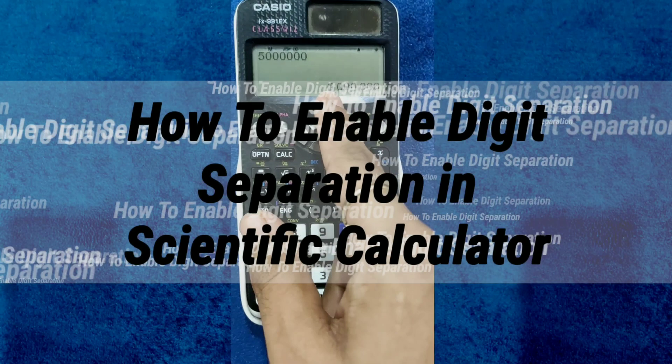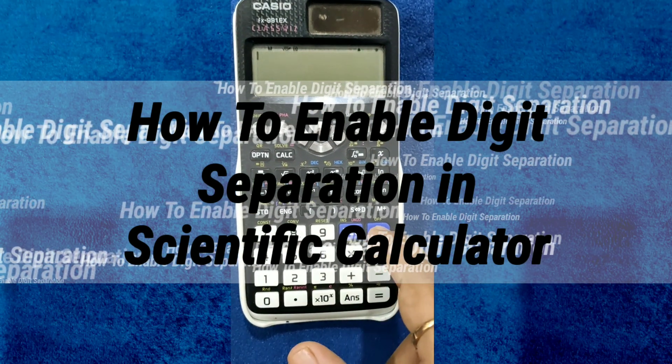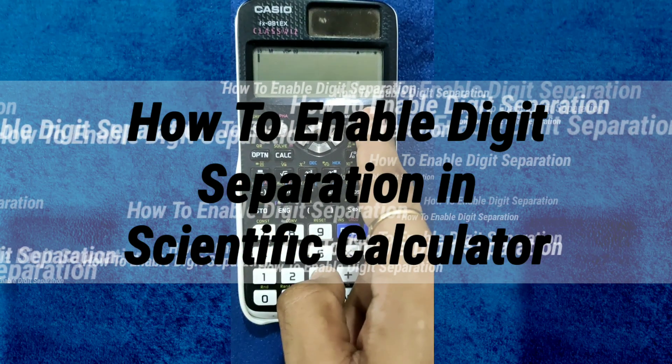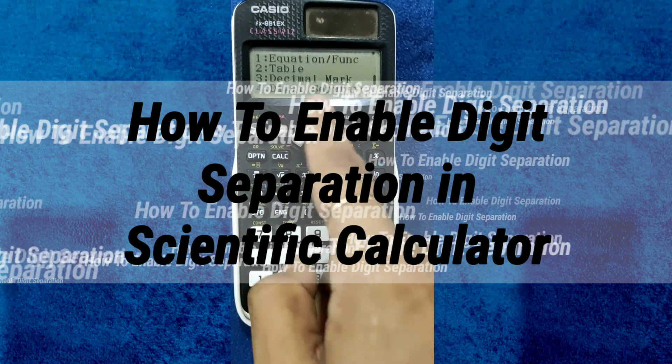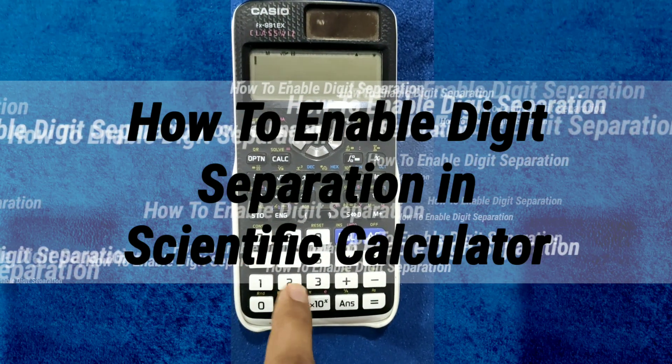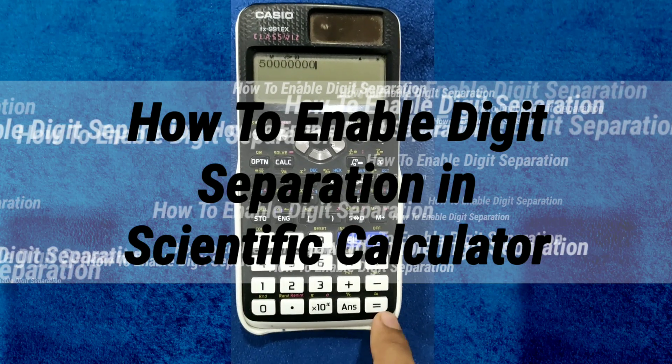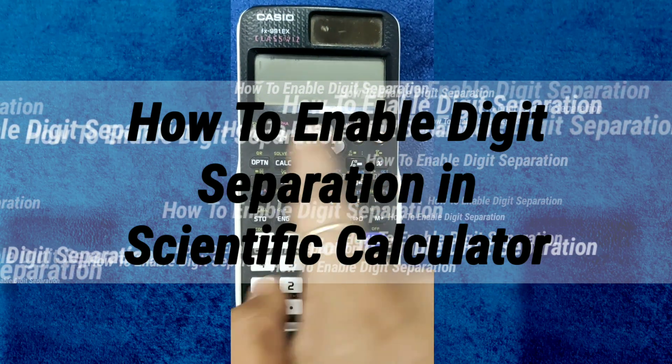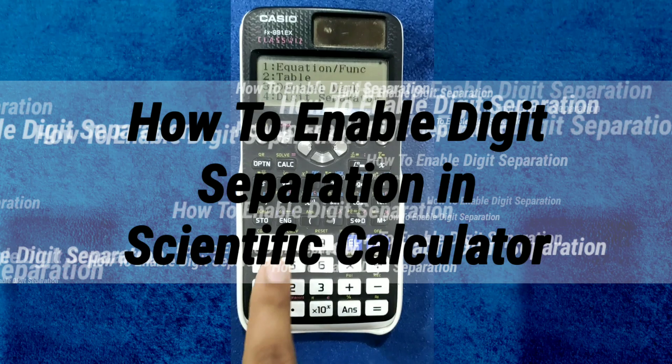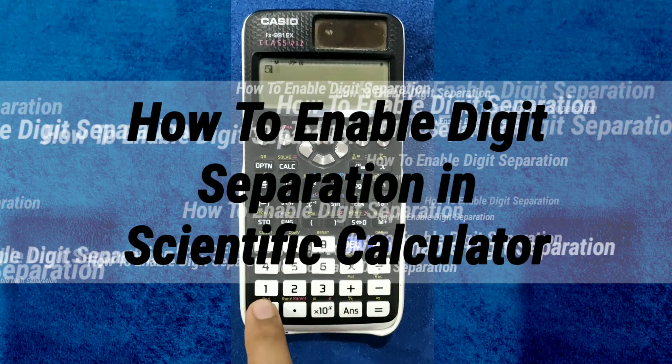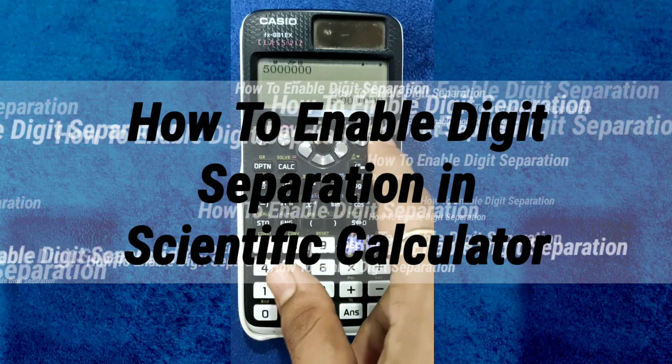Hey guys, welcome back to my channel Engineer Singh. In today's tutorial, I will show you how to enable digit separation in a scientific calculator. I am using a Casio FX991EX calculator. Follow the simple steps, so without wasting any further time, let's start our video.